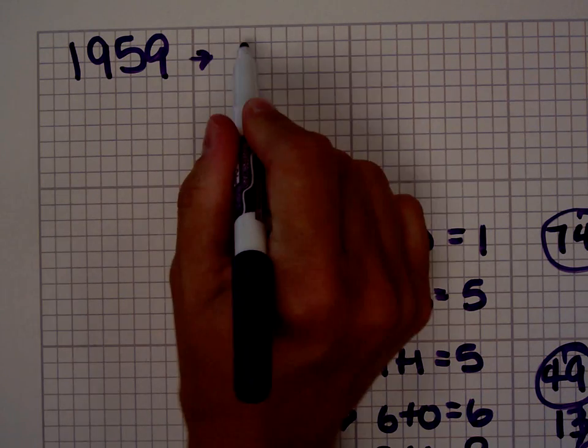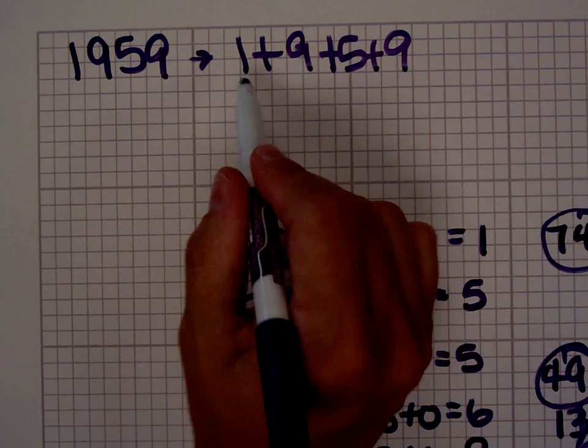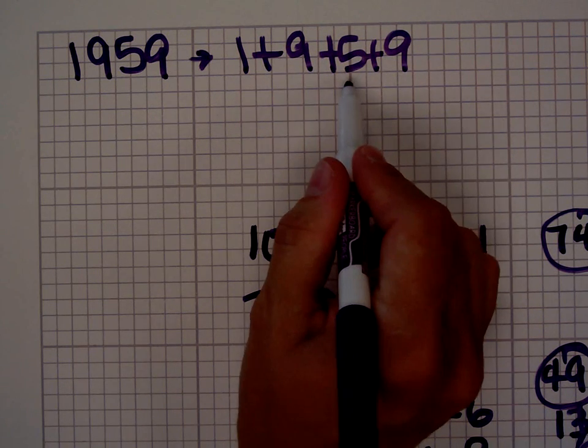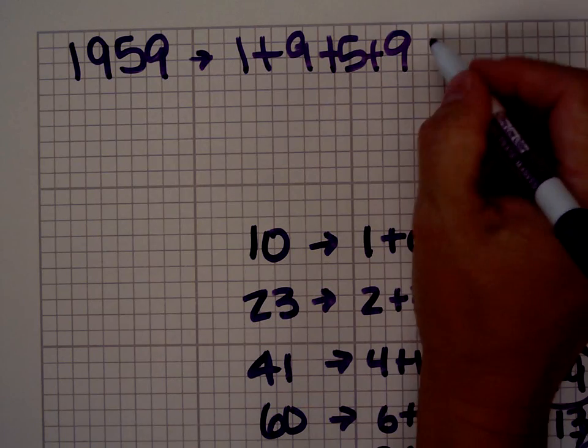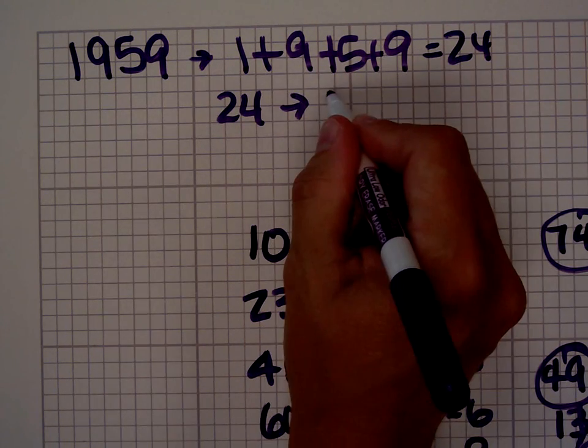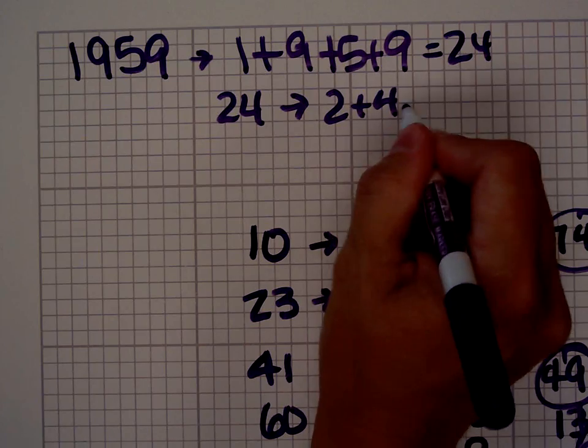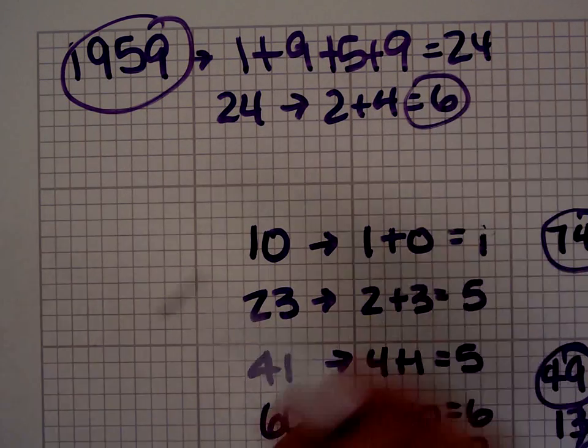we would add 1 plus 9 plus 5 plus 9. 1 plus 9 is 10. 10 plus 5 is 15. 15 plus 9 is 24. The digital root of 24, 2 plus 4 is 6. So the digital root of 1959 is 6.